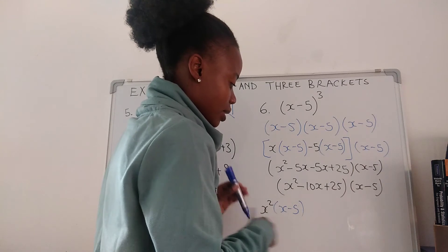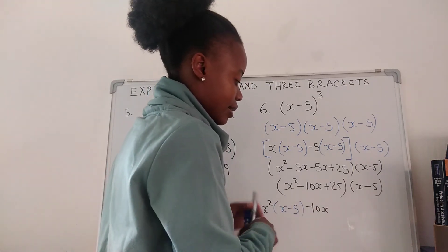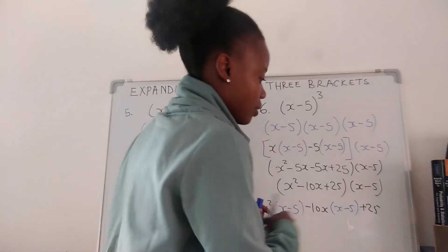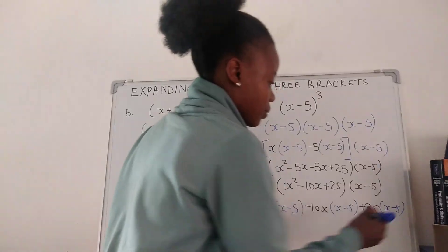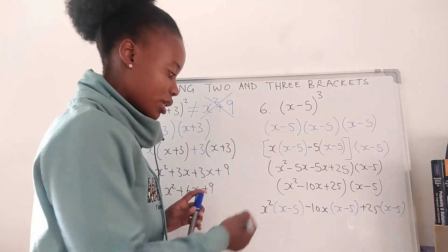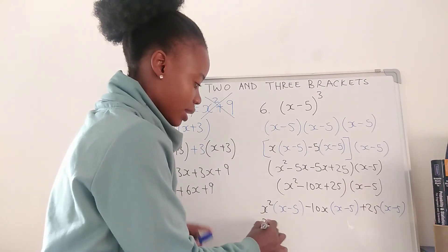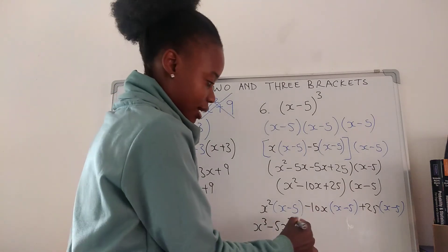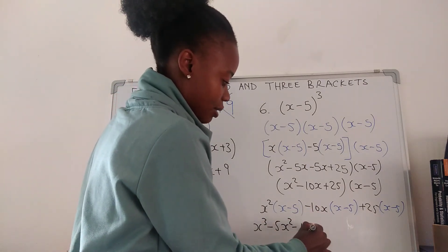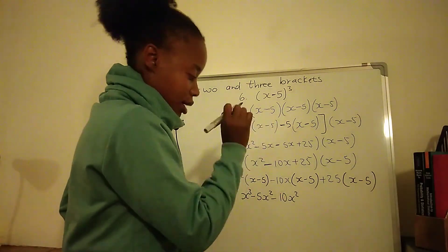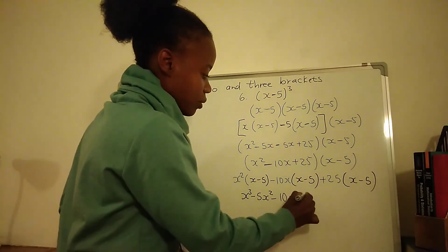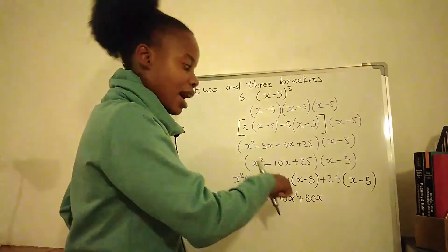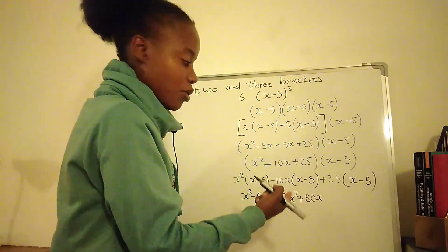So we have x squared(x − 5), negative 10x(x − 5), and positive 25(x − 5). Removing brackets: x squared times x is x to the power 3, x squared times negative 5 is negative 5x squared. Negative 10x times x is negative 10x squared, negative 10x times negative 5 gives positive 50x — because a negative and a negative give you a positive.